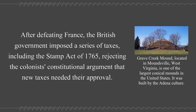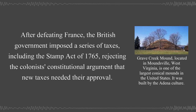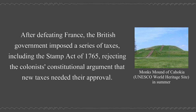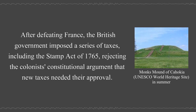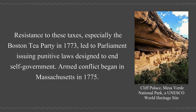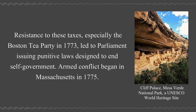After defeating France, the British government imposed a series of taxes including the Stamp Act of 1765, rejecting the colonists' constitutional argument that new taxes needed their approval. Resistance to these taxes, especially the Boston Tea Party in 1773, led to Parliament issuing punitive laws designed to end self-government.